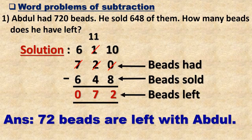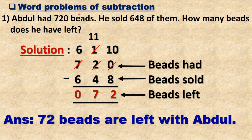Now, subtraction word problem — first example: Abdul had 720 bits. He sold 648 of them. How many bits does he have left? The information given to us: 720 bits had, 648 bits sold.